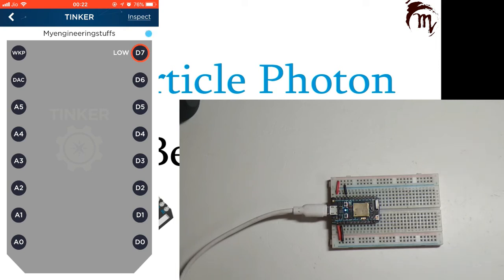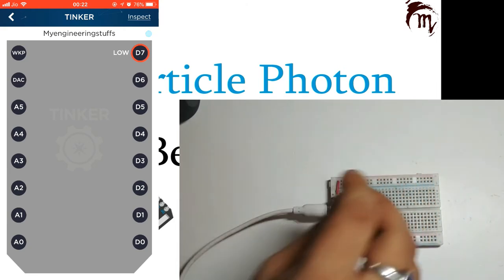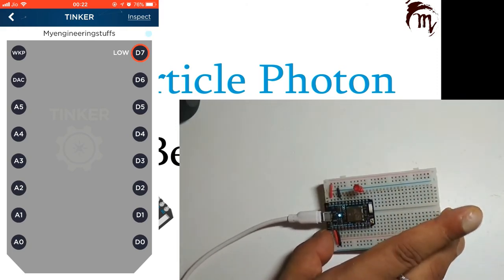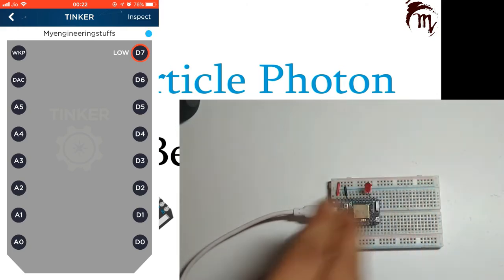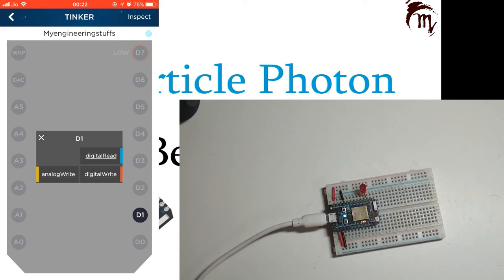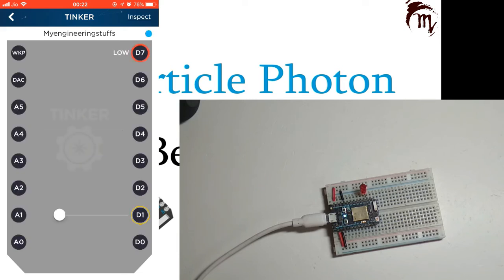Now let's do another example. I'll connect an LED with the positive side to D1 and the negative side to ground. Now it's connected to D1. We will set this D1 pin as analog write. By sliding this slider, we can increase or decrease the intensity of the light connected to pin D1.